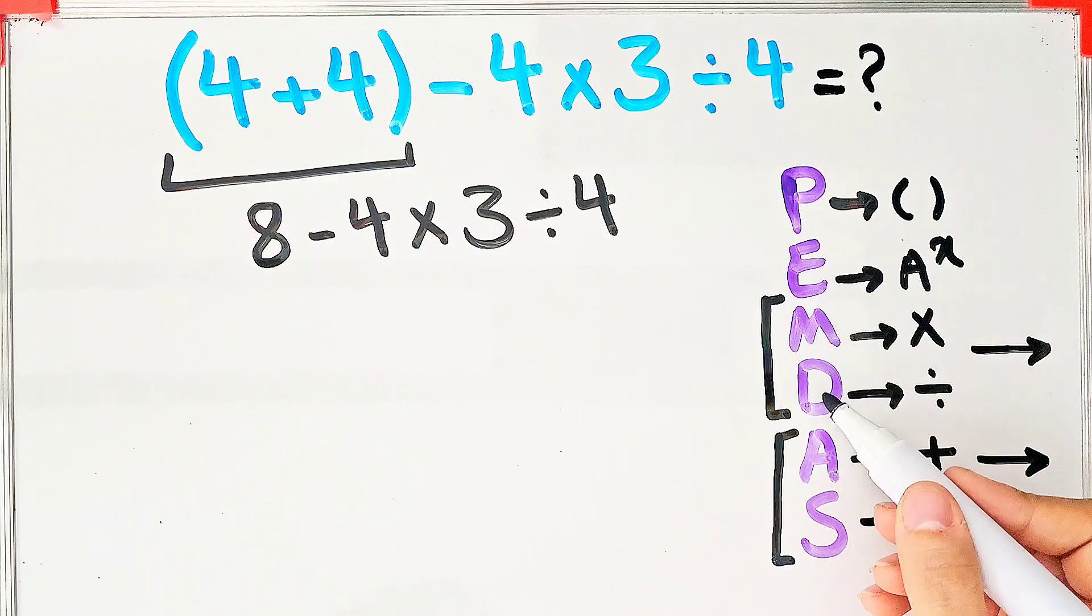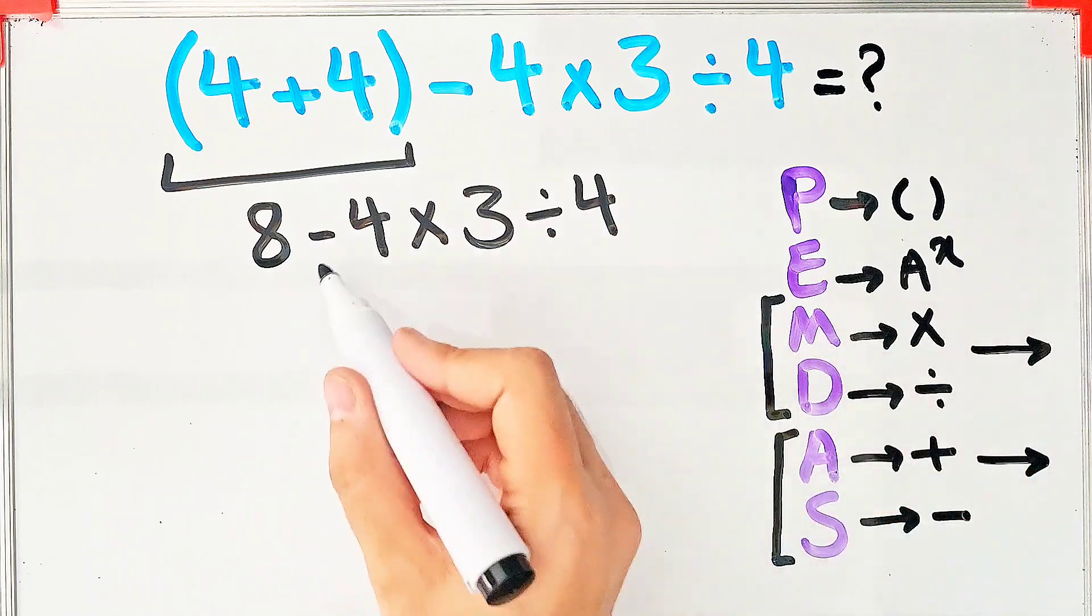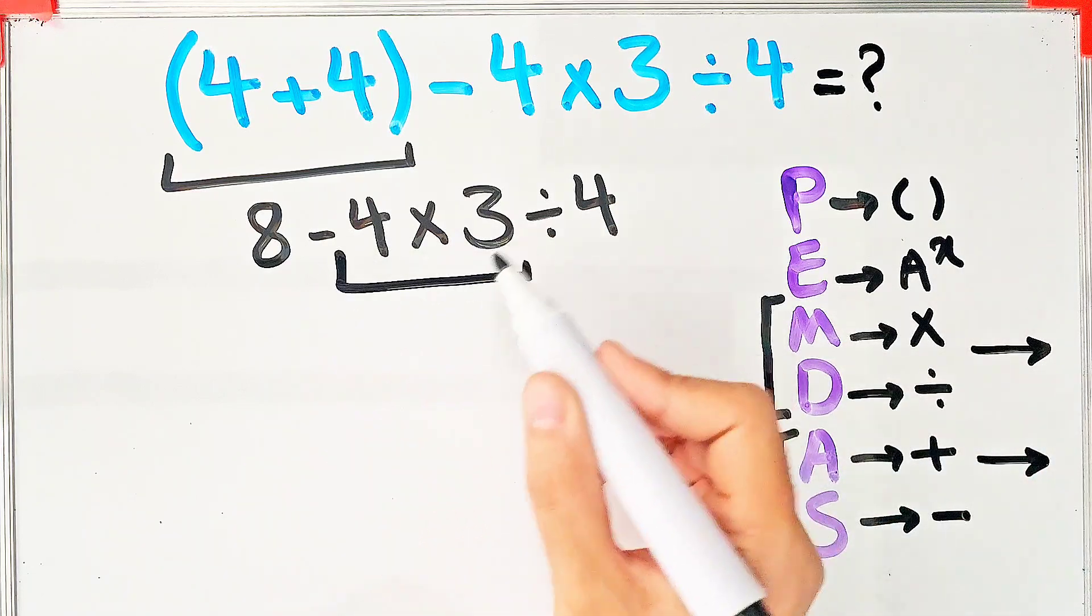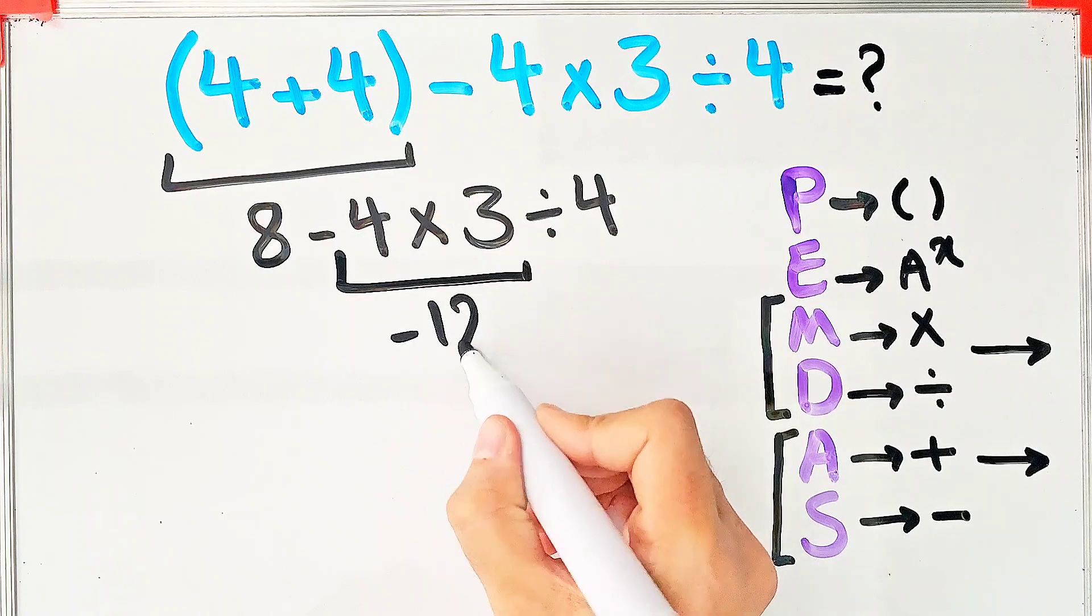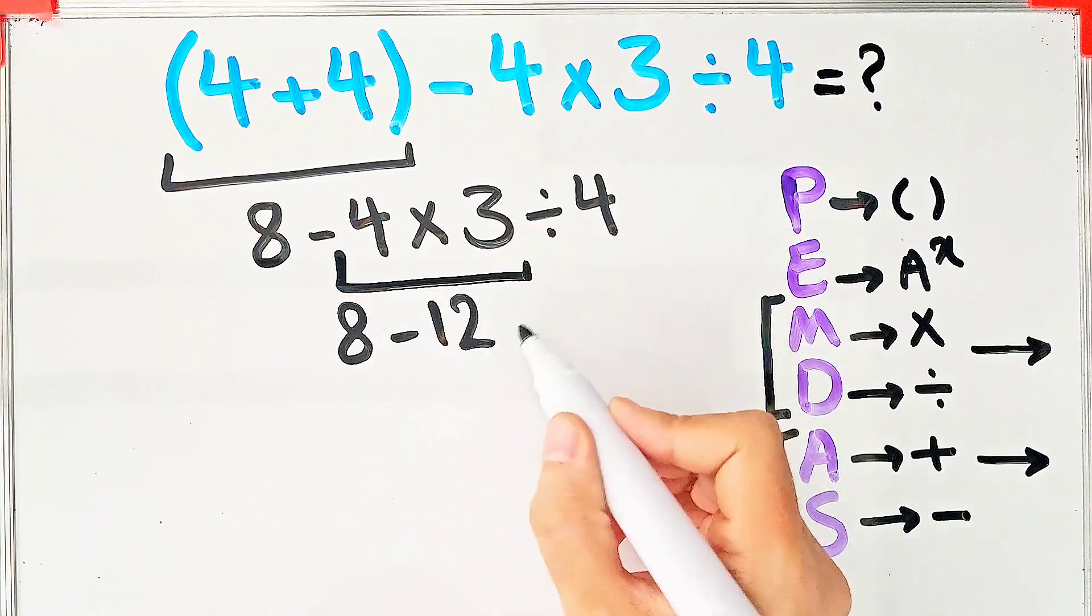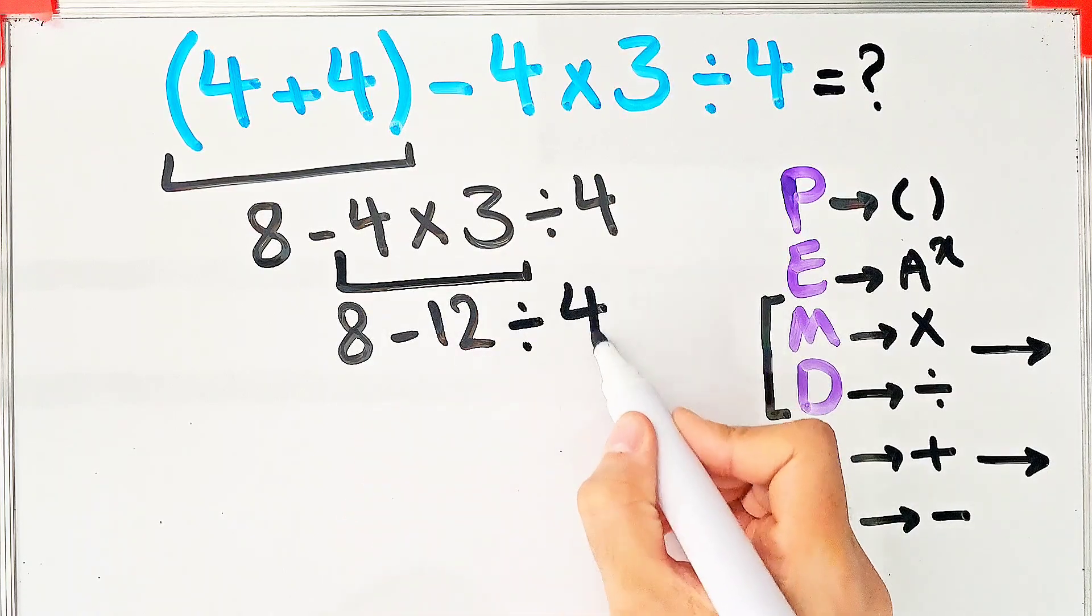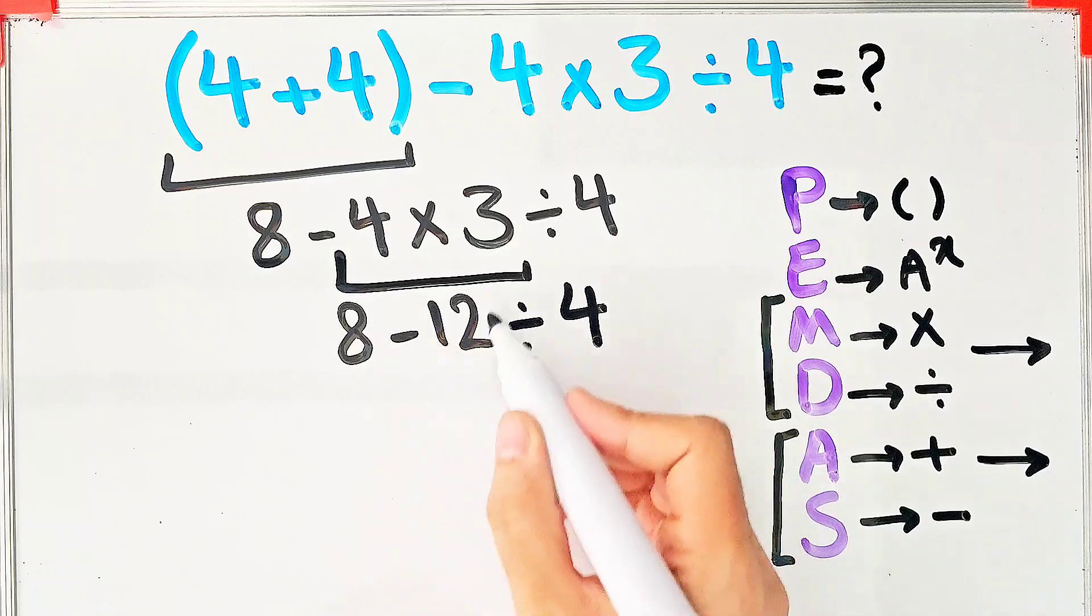Negative 4 times 3 equals negative 12. 8 minus 12 then divided by 4. In this step we do the division because the division has higher priority than subtraction.